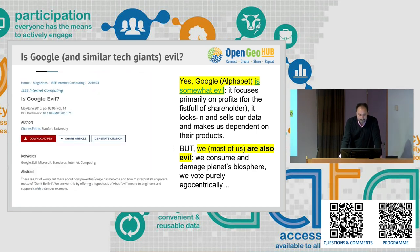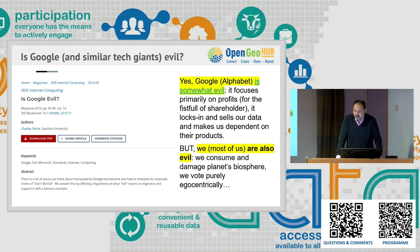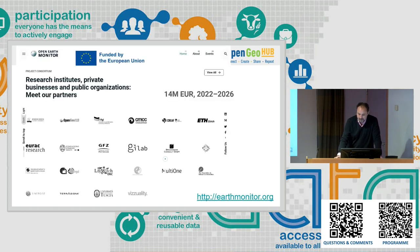Somebody published a paper: 'Is Google evil?' — back in 2010. It's very interesting. Is it evil? Personally, I think many of these corporations are a bit evil — they have hidden agendas, they trick you into things, and they want to maximize their profit sometimes at any cost. But we are also not angels. We mess up the climate and we vote egocentrically. We love that voting is anonymous so we can vote for whoever we like, even groups that maybe are not for equal opportunities or are anti-immigration. So we are also a bit evil.